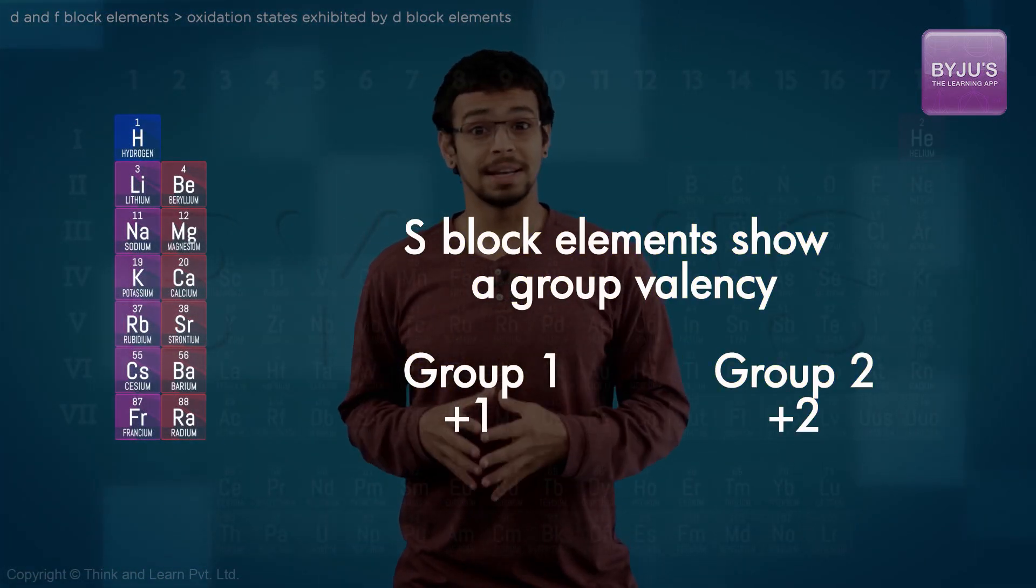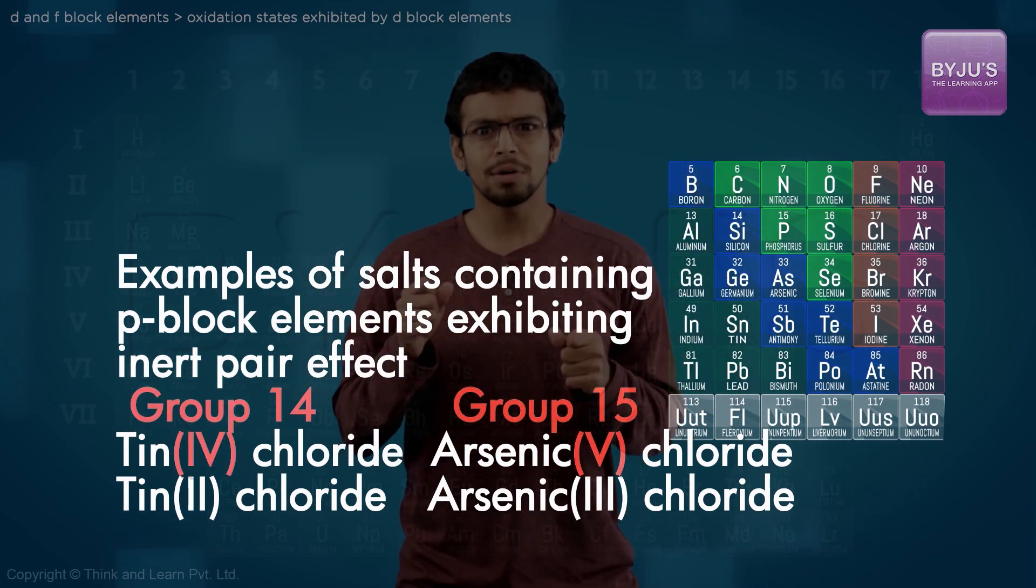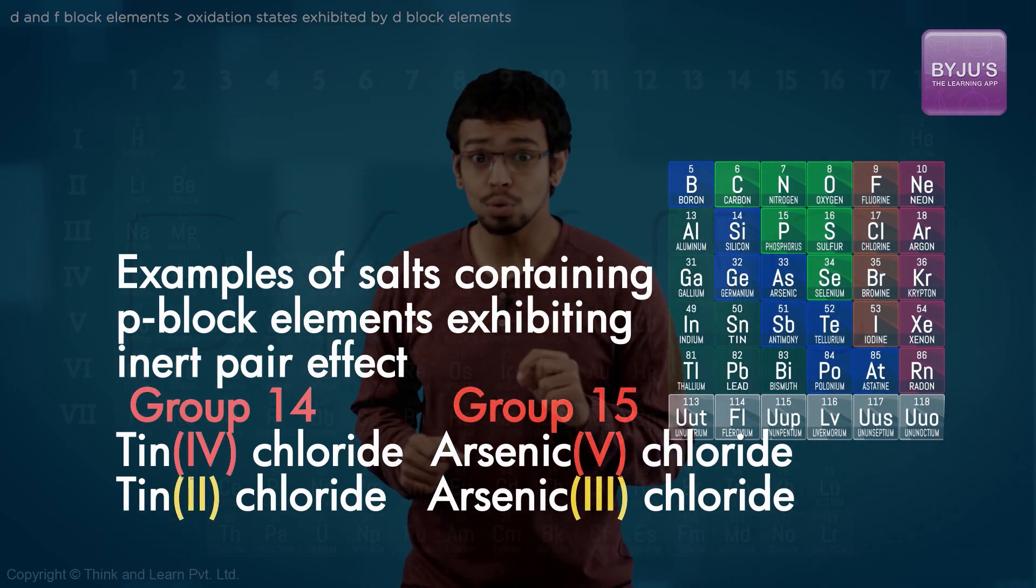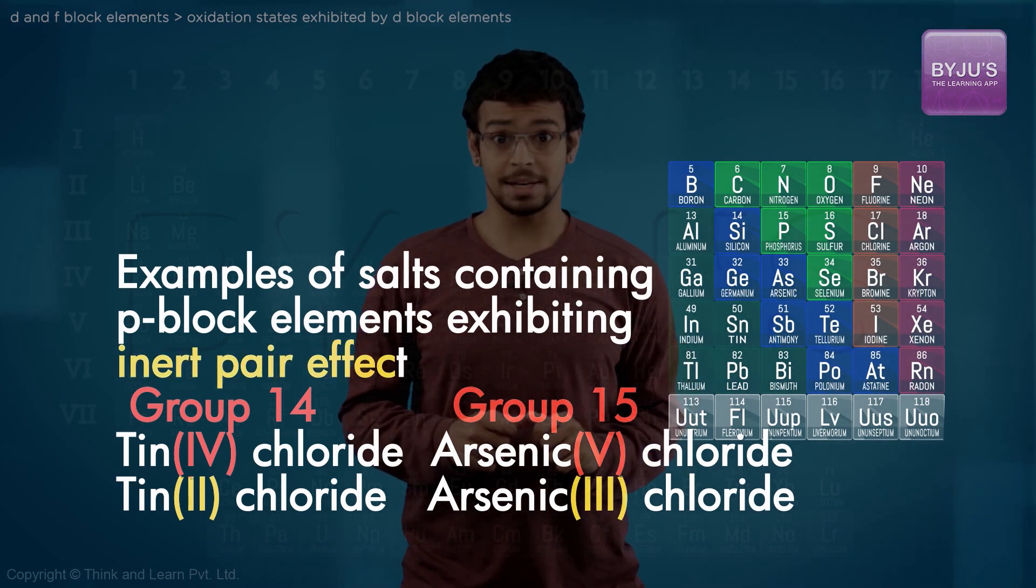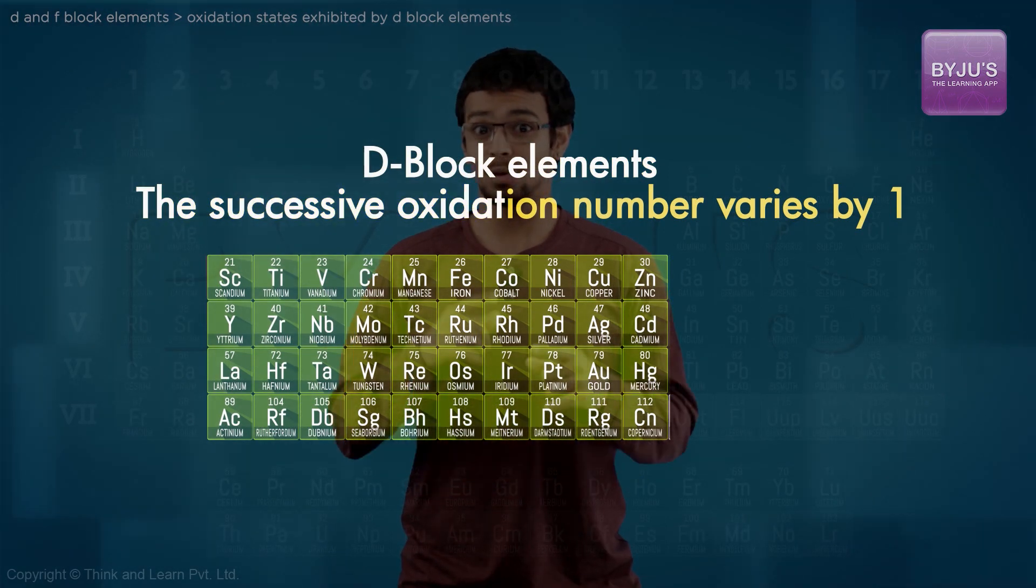While the s block elements show only group valency and p block elements show either the group valency or a valency less by 2 due to the inert pair effect, the possible valencies exhibited by the d block elements do not differ by 2 but by 1.